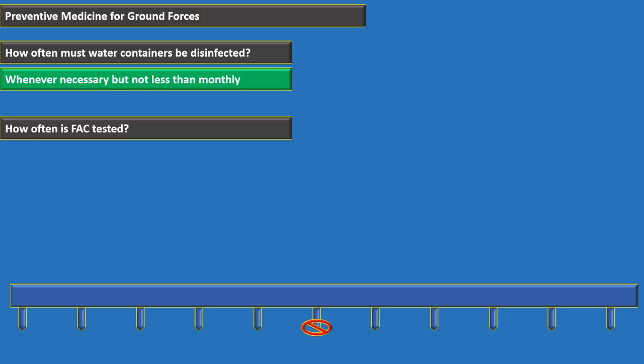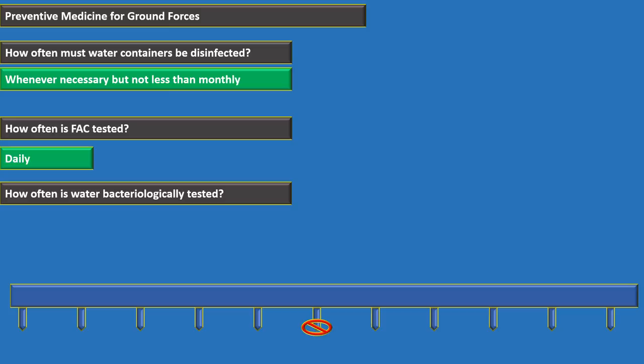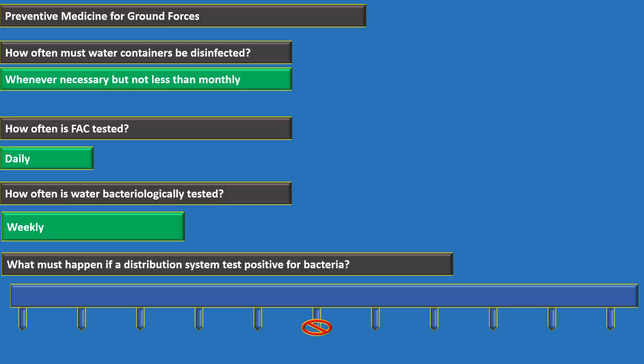Water is tested for bacteria weekly. If a distribution system tests positive for bacteria, retest at the positive location after troubleshooting and disinfection, then retest five outlets upstream and five outlets downstream.